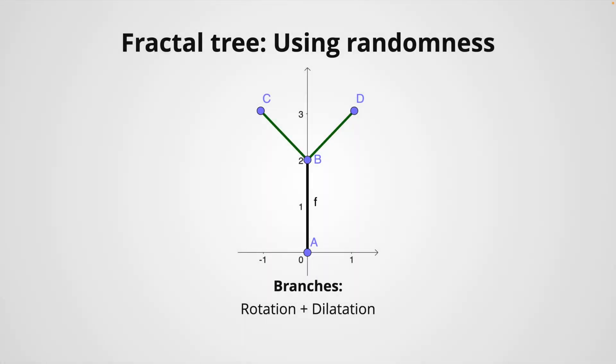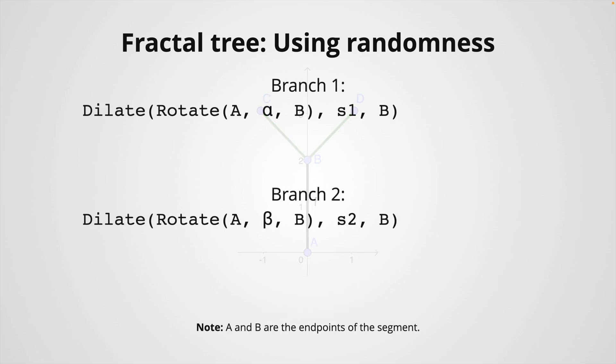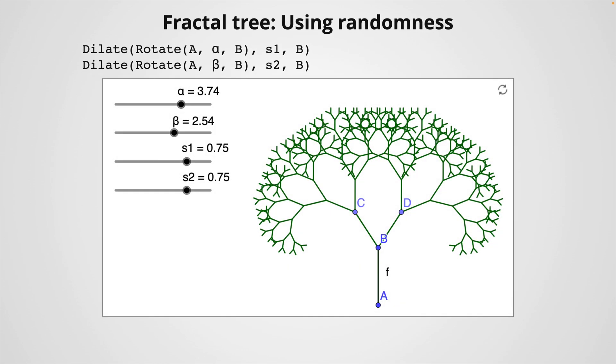In the previous example, we started with a segment and two branches using the fixed values for rotation and dilation. We can replace these fixed values for parameters, for example, and vary them to see what happens. And here, for example, I replace the fixed values for a slider, so we can easily change them and play around to see what happens.